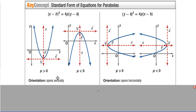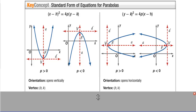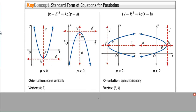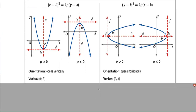So one form opens vertically and the other opens horizontally. The vertex on both is (h, k). x goes with x, y goes with y, and we always do opposite in the parentheses. So if this number is with x, it goes in the x spot; if k is with y, it goes in the y spot.